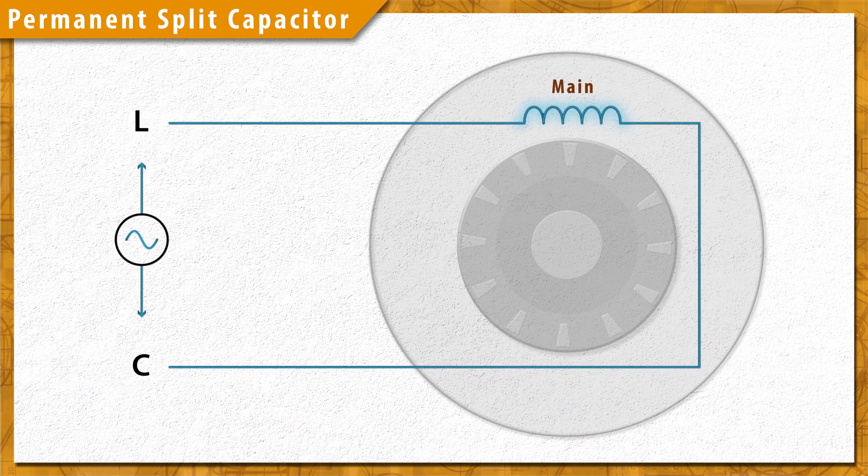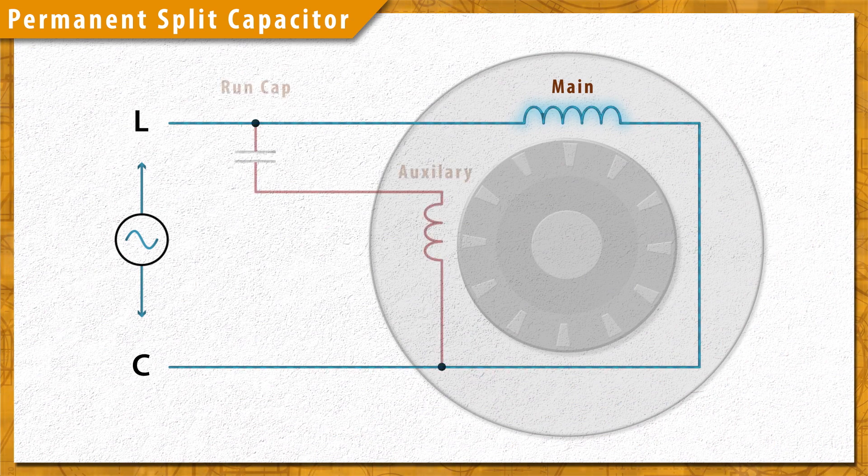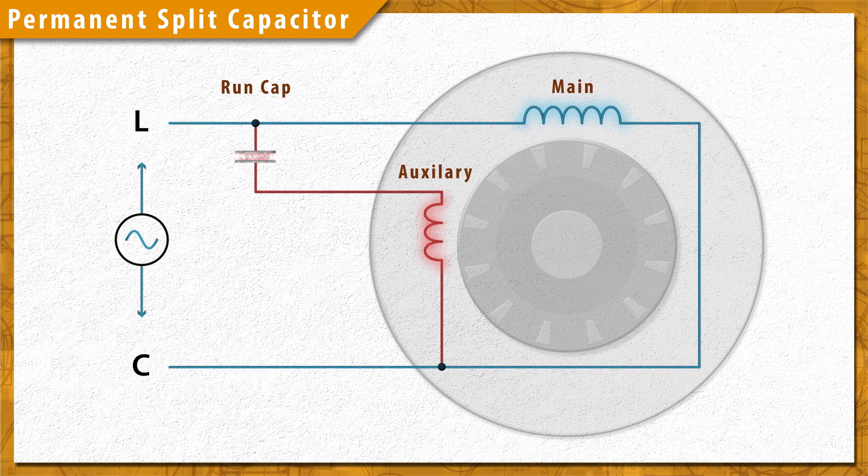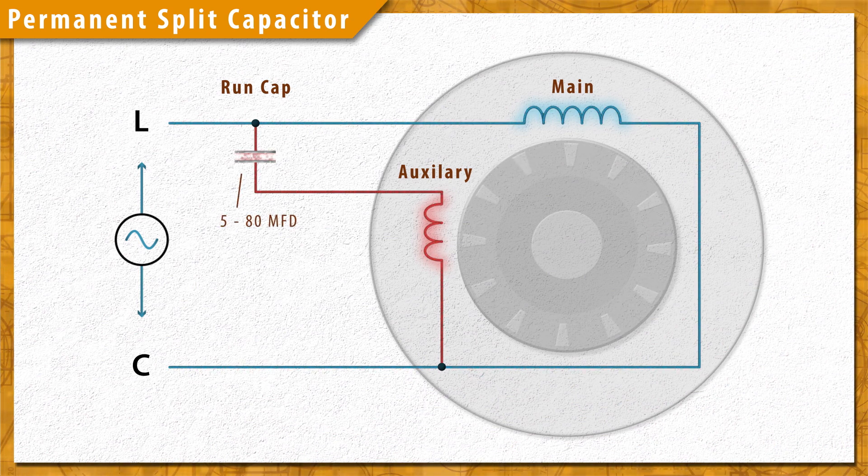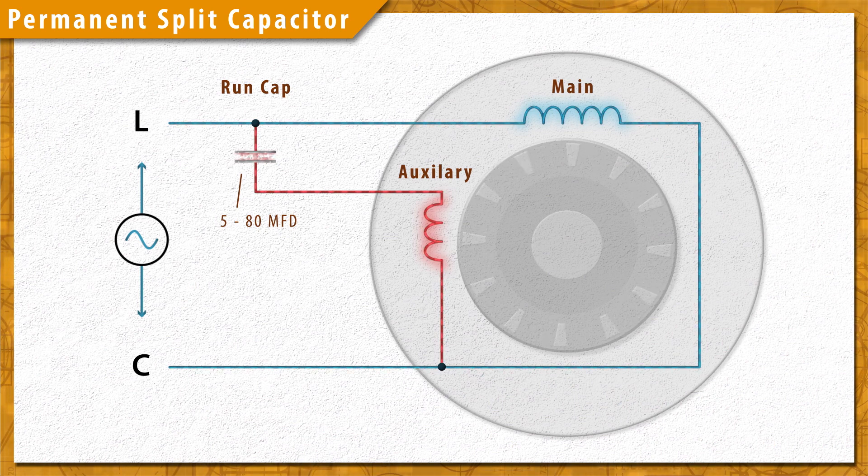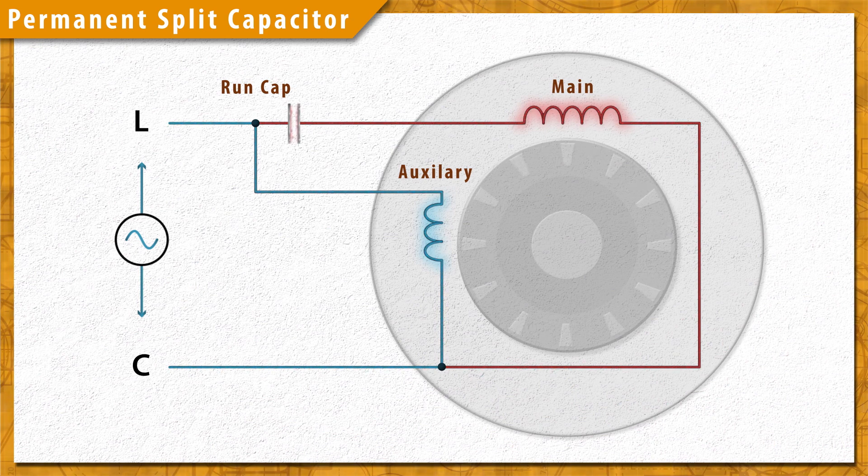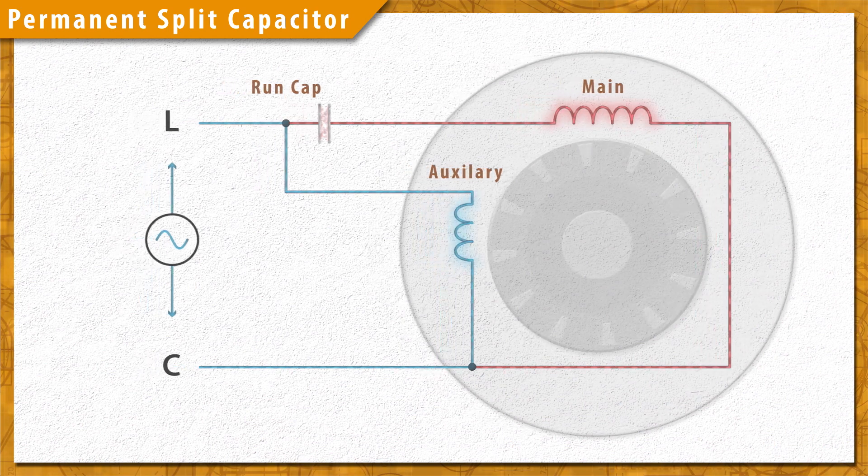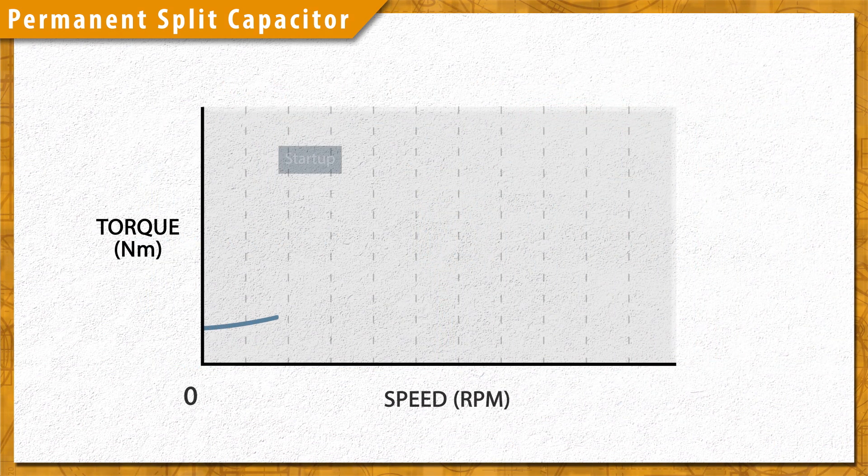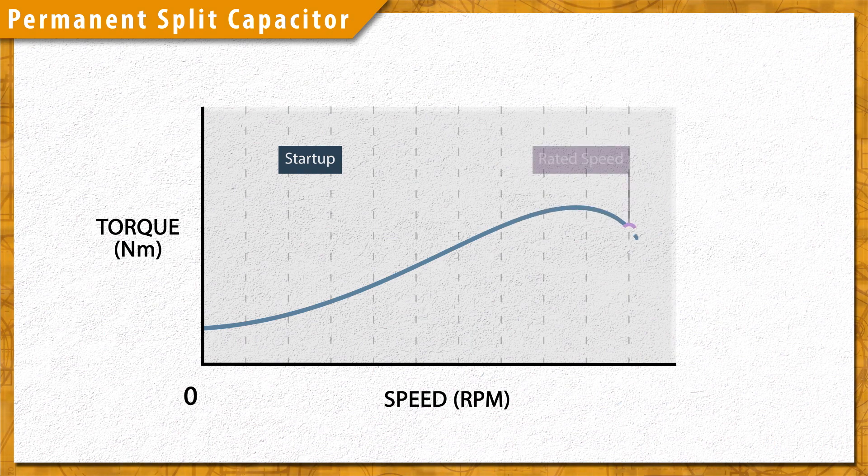Permanent split capacitor or PSC motors use a small capacitor to create a phase shift in the auxiliary winding. This run capacitor is permanently wired in the circuit and has a low capacitance of around 5 to 80 microfarads. Therefore, PSC motors functionally run as two phase motors, and in a lot of cases the rotation can be easily reversed by rewiring the capacitor to the other winding. PSC motors are usually 45 to 60% efficient, but have a low starting torque. This makes them ideal for blower fans.